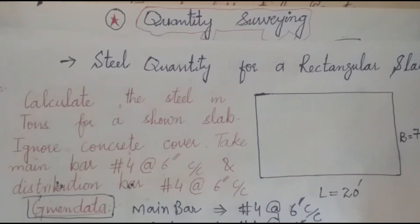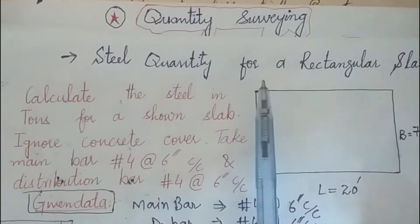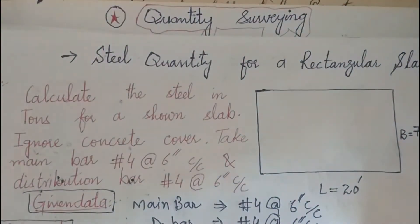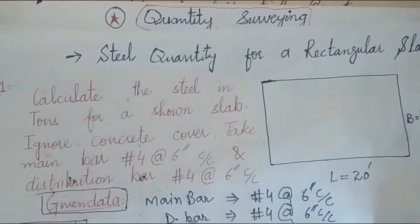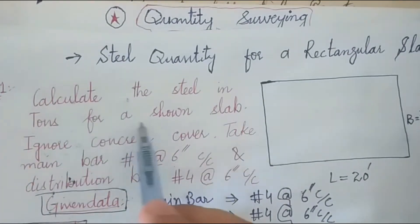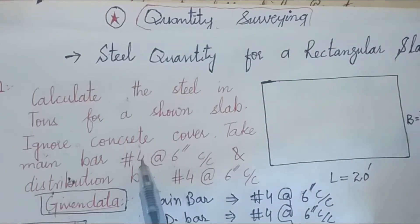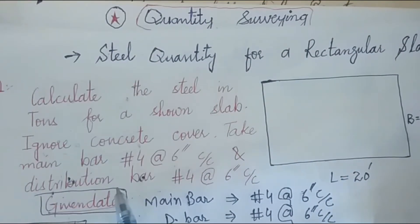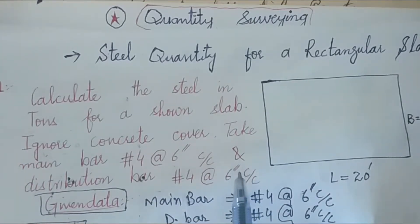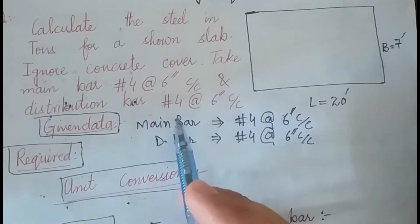Bismillahirrahmanirrahim, Assalamu Alaikum. Today's topic is about quantity surveying — specifically steel quantity for a rectangular slab. We are given one dimension of 20 feet and the other dimension of 7 feet. The question asks us to calculate the steel in tons for the shown slab, ignoring concrete cover. The main bar is number 4 bar.